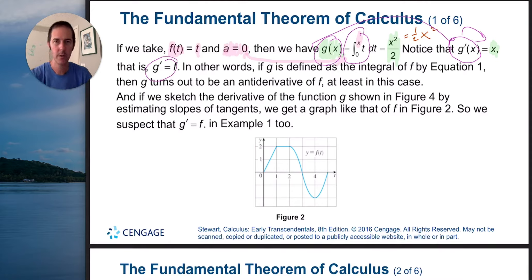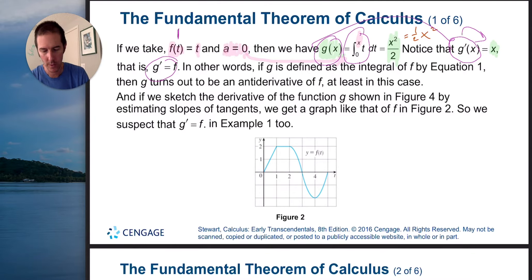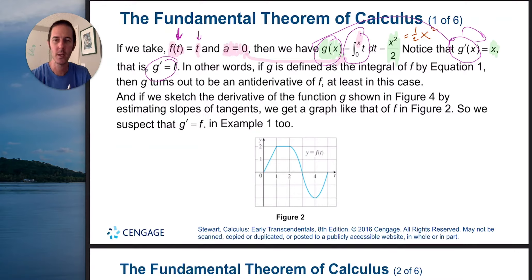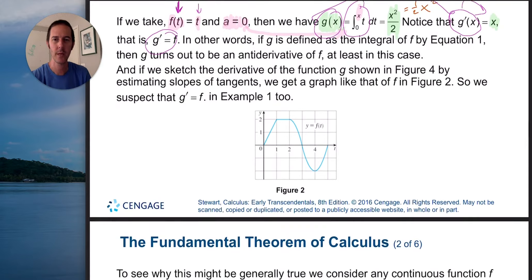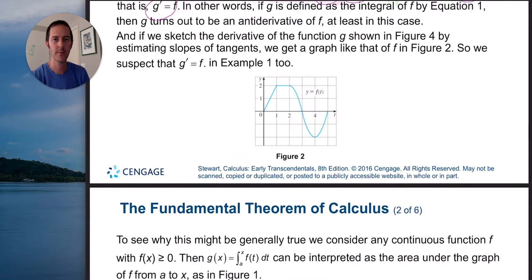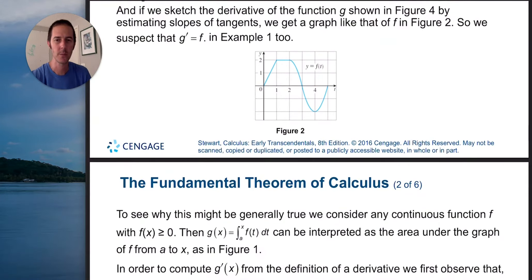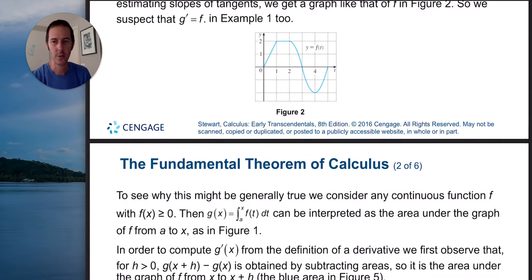The point we're trying to make is that g prime is equal to f. When we take the derivative of g, we get x — highlighted in green. What is f of x? Replace the t value with x, and all of a sudden g prime does indeed equal f. G is defined as the integral of f, and g turns out to be an antiderivative of f, at least in this case. If we sketch the derivative of the function g by estimating slopes of tangent lines, we get a graph like that of f — so we suspect the derivative is equal to the original function.